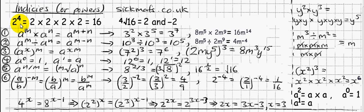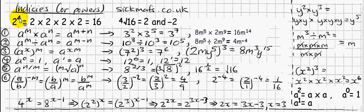Here's a quick example of how powers work. 2 to the power 4 equals 2 times 2 times 2 times 2 — basically you've got four 2's all multiplying each other. That's different to 4 times 2, which is 8, because 2 times 2 times 2 times 2 is 16. The reverse of that uses the root sign — in this case the fourth root of 16, which asks: what to the power 4 makes 16? The answer is 2.